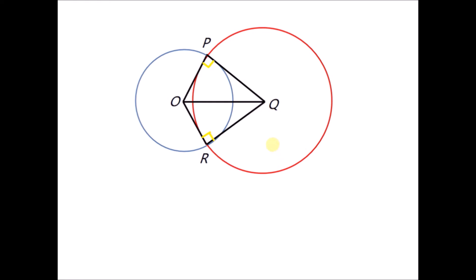Since those angles are 90 degrees, this means that PQ is a tangent to the circle with center O, and RQ is also a tangent to the blue circle with center O. Meanwhile, OP is a tangent to the red circle, and OR is also a tangent to the red circle.